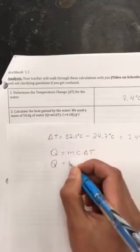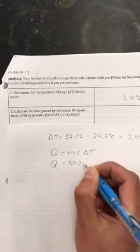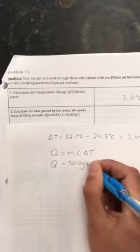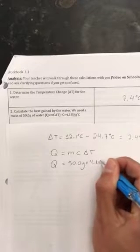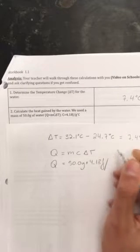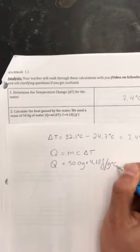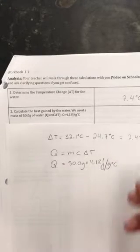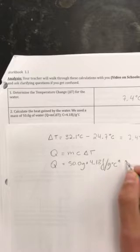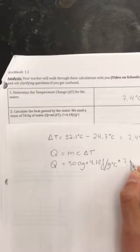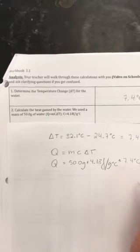Your m is 50, your mass 50 grams, times this was also given to you so 4.18 joules per gram Celsius, and your ΔT actually we calculated in the previous step so it's 7.4°C.